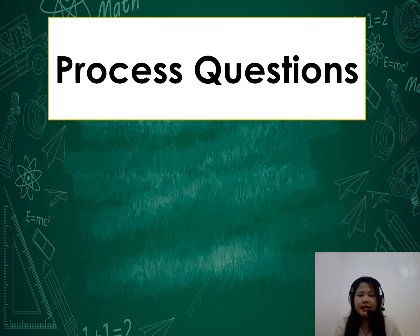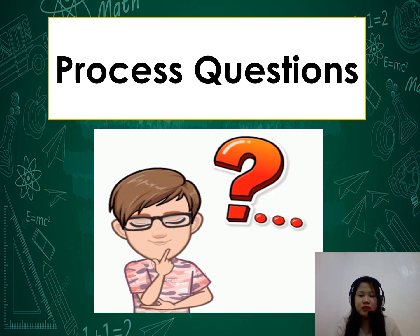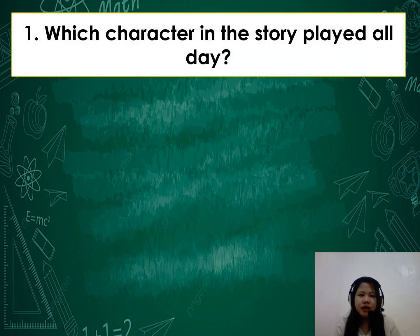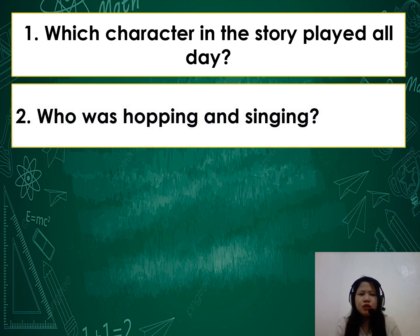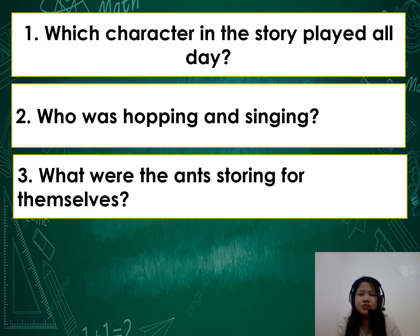Now let us answer the questions about the story we watched. Number 1: Which character in the story played all day? Very good — that is the grasshopper. The grasshopper played all day. Number 2: Who was hopping and singing? It is also the grasshopper. Number 3: What were the ants storing for themselves? The ants were storing food for themselves so that when winter comes there will be enough food.